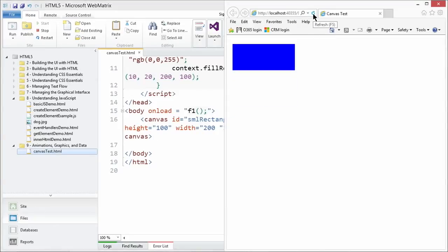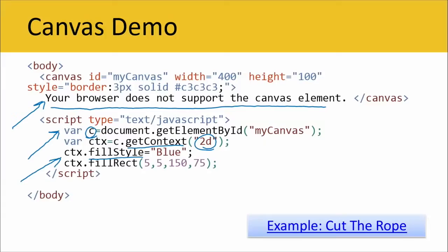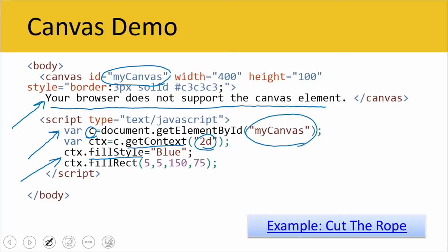Let me refresh this again. There you see just one blue rectangle. I'm sorry for the confusion on that. If you guys go back and take a look at this demo code, go ahead and copy and paste that into WebMatrix yourself and you'll get a clean, crisp example that makes a little bit more sense. Remember that the id used in the getElementById method has to be the same as the HTML element that you're referring to.